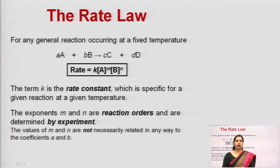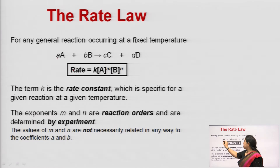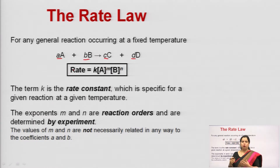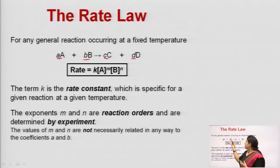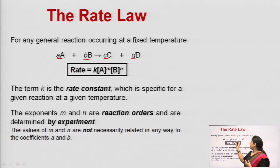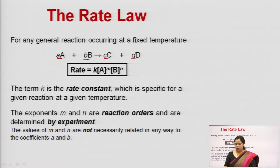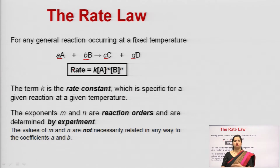For any general reaction occurring at a fixed temperature, the small alphabets represent the coefficient values. For reactants A and B giving products C and D, the coefficient values are present along with them. The term k is a rate constant — it is a constant which is specific for a given reaction at a given temperature. Basically, the rate of reaction is very specific at the temperature at which it is reacting.